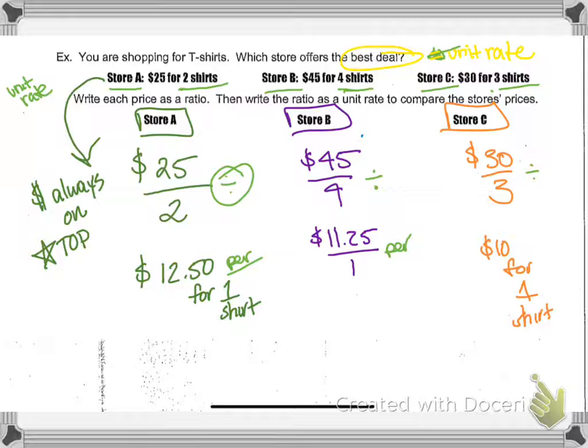So if the question is asking me what's the best deal, I'm going to look at the cheapest amount, the cheapest unit rate. So definitely store C is going to be the best deal. $10 per shirt is the cheapest that there is out there.